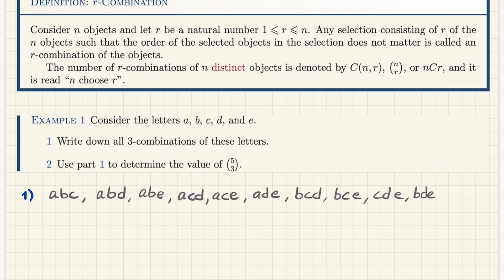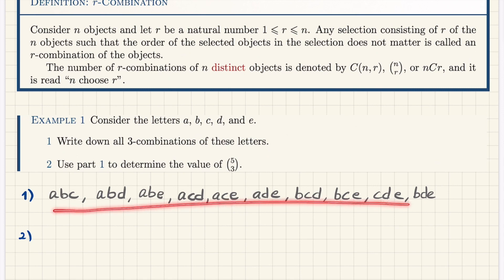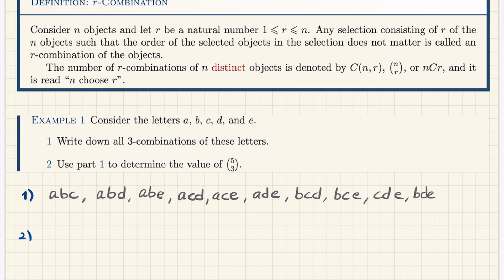In part two, I ask you to use part one to determine the value of 5 choose 3. This symbol means: given five distinct objects A, B, C, D, E, in how many ways can I choose three of them where order does not matter? If I've done everything correctly, counting the combinations listed gives 10. So using part one, 5 choose 3 equals 10. The formula coming later will confirm this.